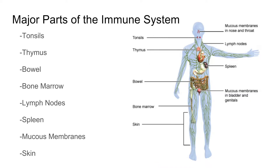The major parts of the immune system include the tonsils, the thymus, the bowel, the bone marrow, lymph nodes, spleen, mucous membranes, and the skin.